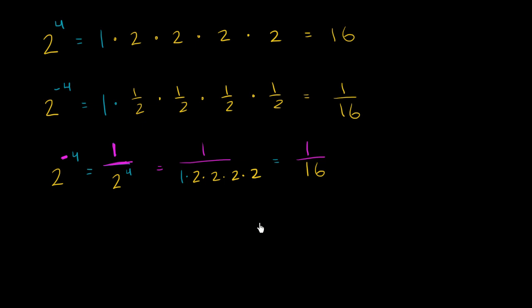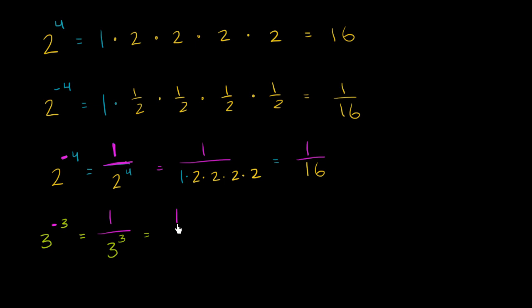So let's do a few more examples to make sure things are clear. Let's try 3 to the negative third power. Whenever you see that negative, what my brain always does is say, I need to take the reciprocal here. So this is going to be equal to 1 over 3 to the third power, which equals 1 over 3 times 3 times 3. 1 times 3 times 3 times 3 is 27, so this is going to be 1 twenty-seventh.